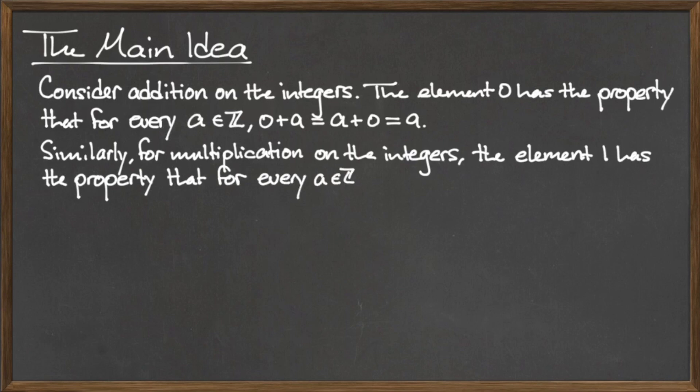For example, addition on the integers. The element 0 has the property that for every integer a, 0 plus a equals a plus 0 equals a. For this reason, we call 0 the additive identity for the integers.